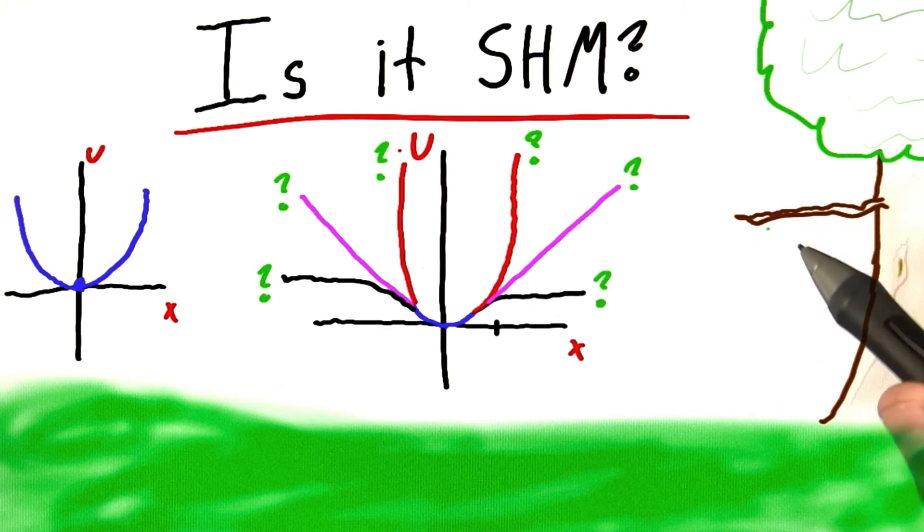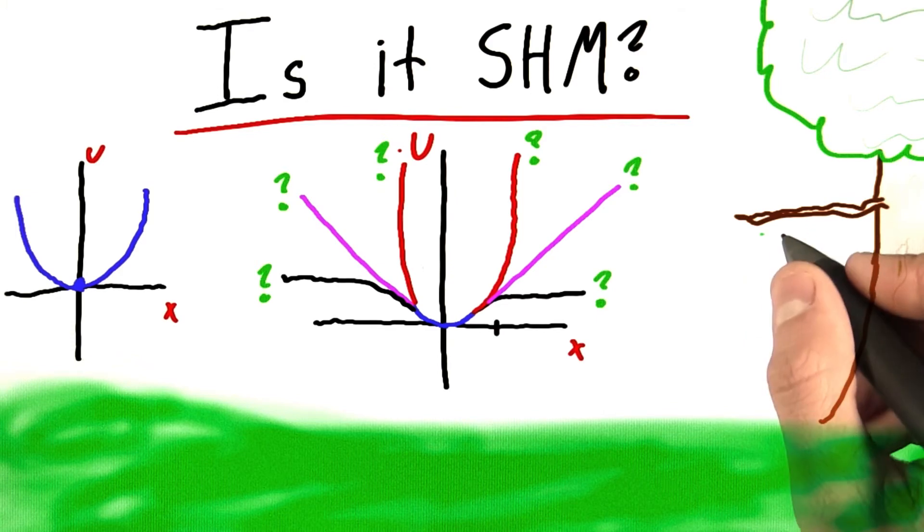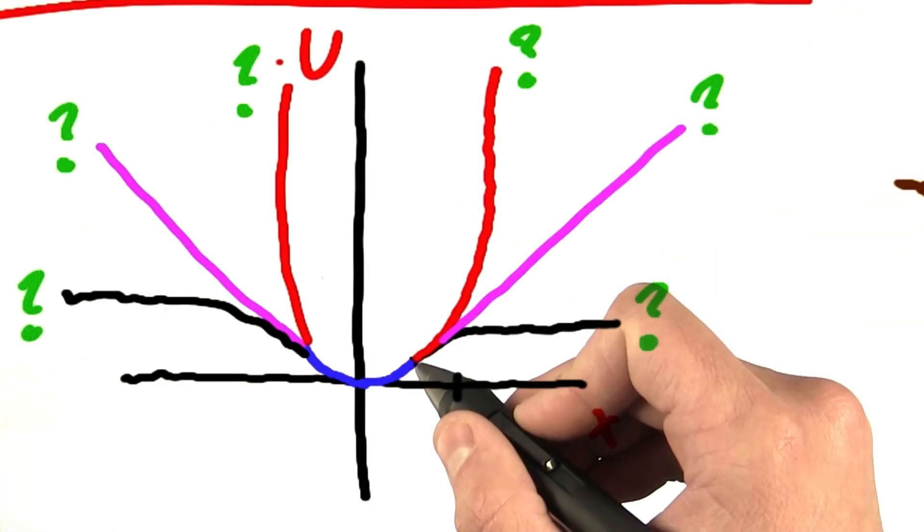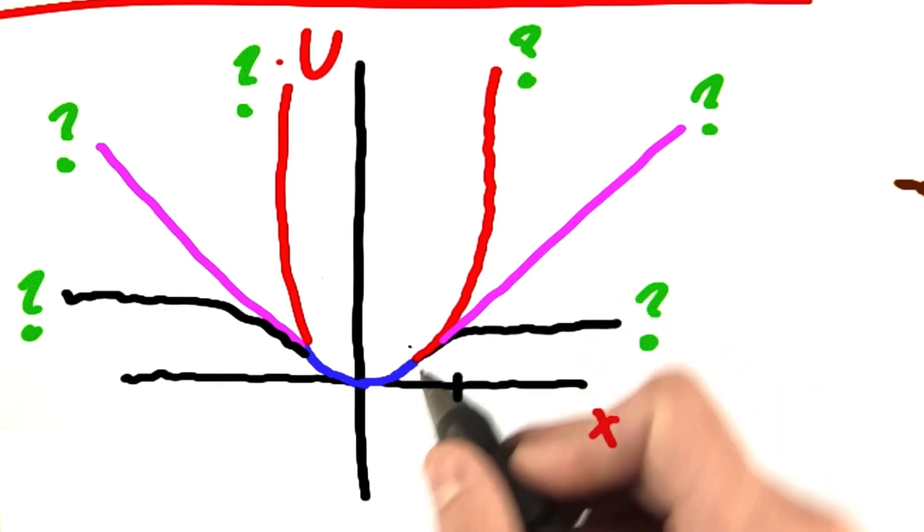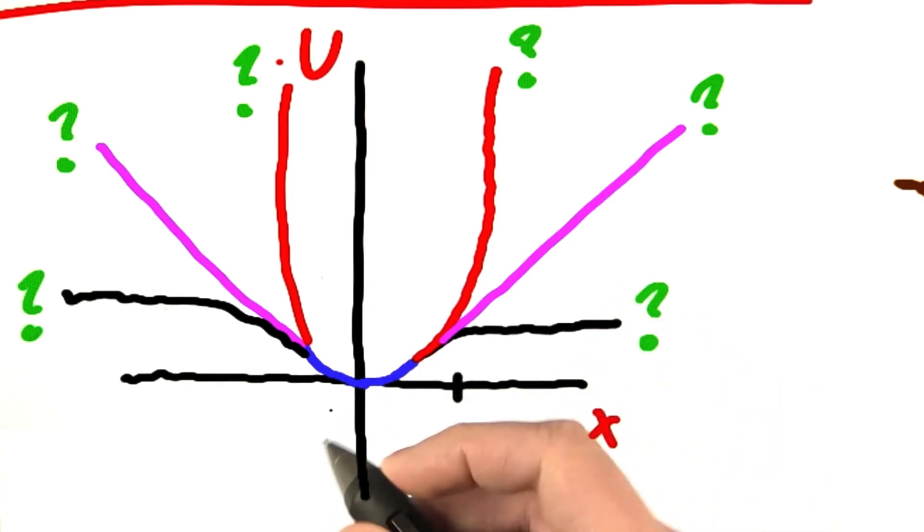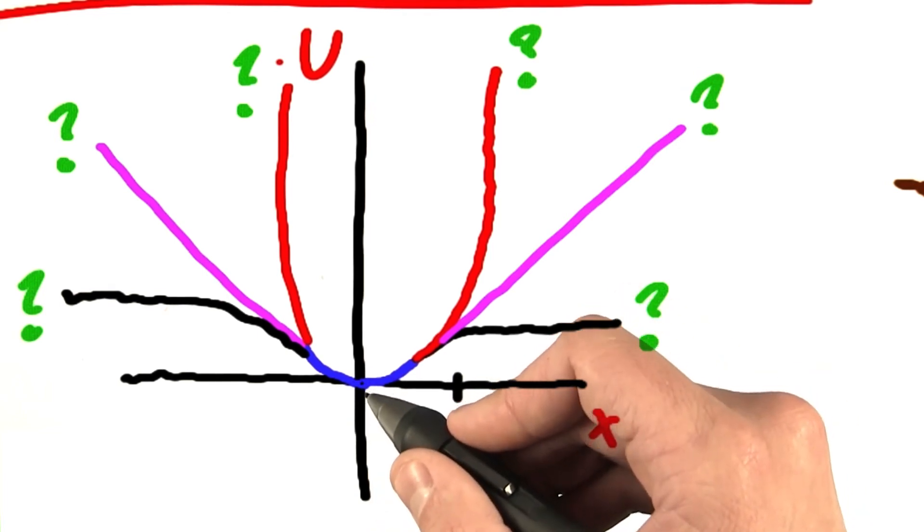But, I'm going to make the claim that we don't need to. Because for small displacements, look what we have here. And it can be proven, mathematically, in a very rigorous way, that for small displacements, this trough must, has to be a parabola.